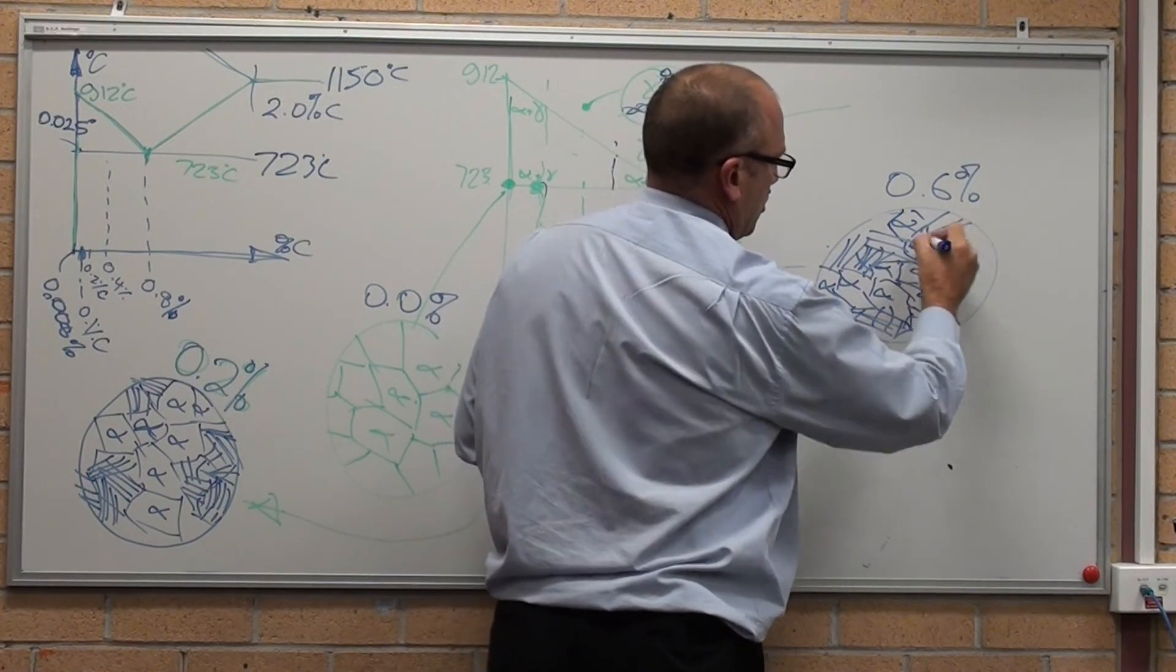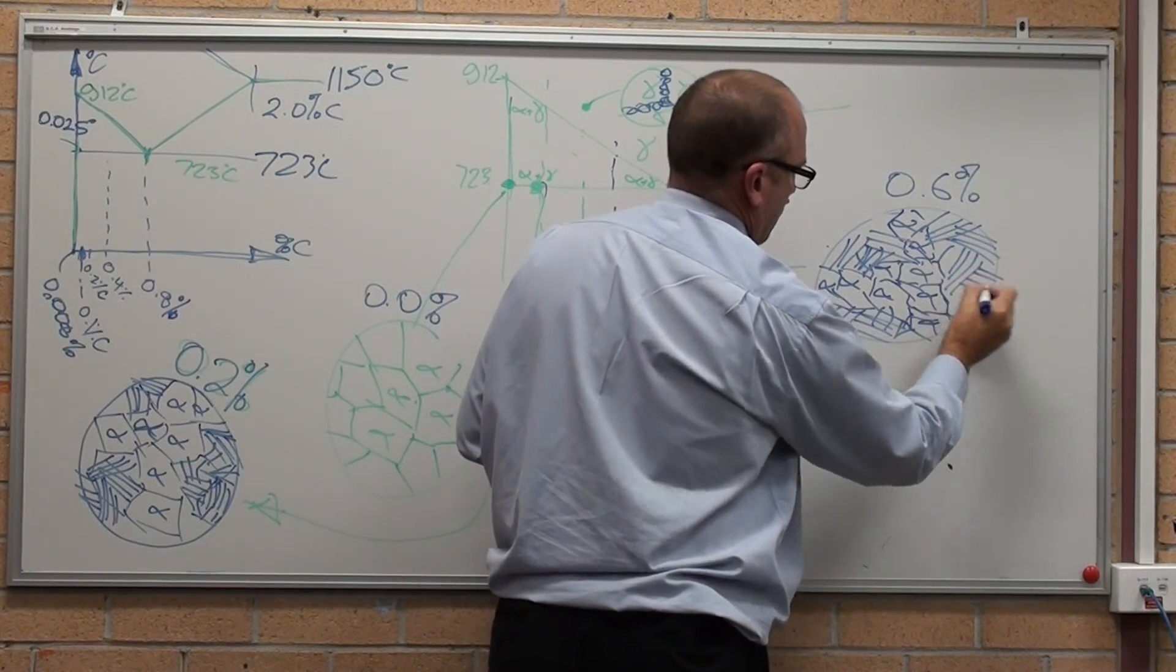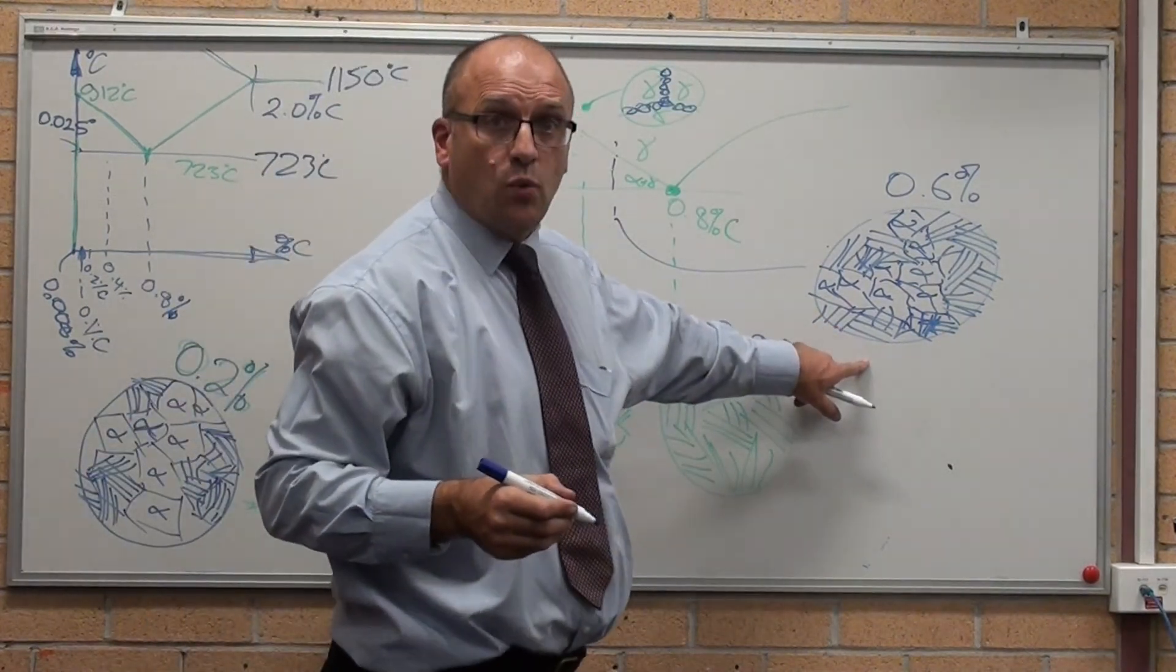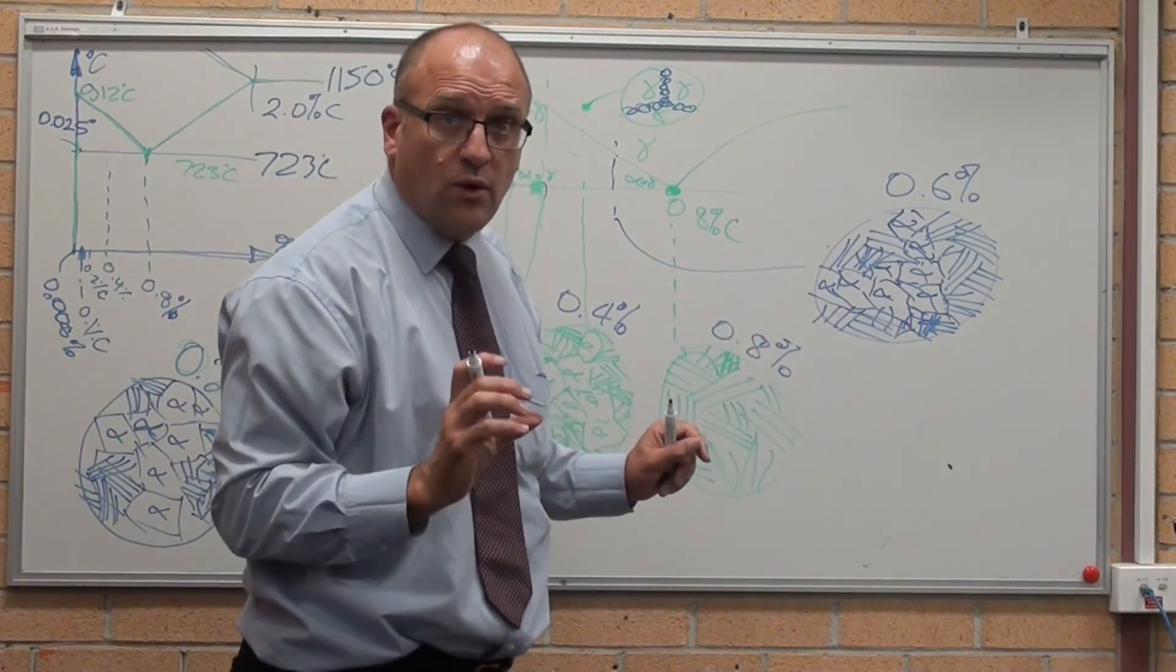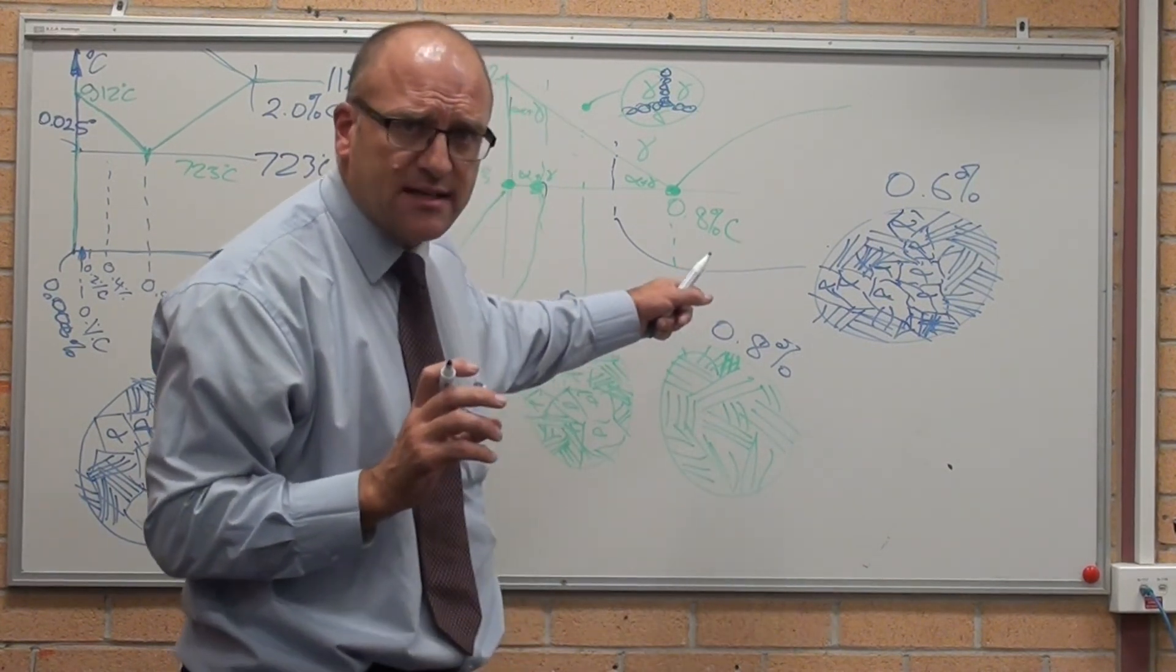I don't think I've drawn too much ferrite there. This should be three quarters. So three quarters pearlite, one quarter ferrite. That is how you draw an accurate microstructure of a hypoeutectoid steel. There we go.